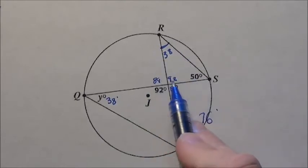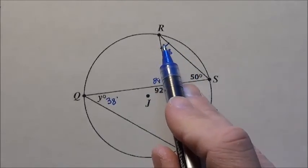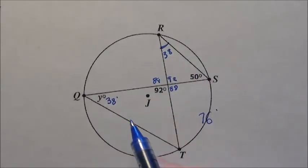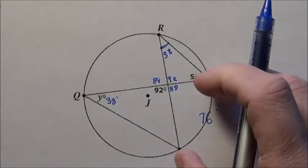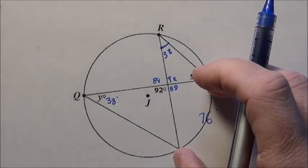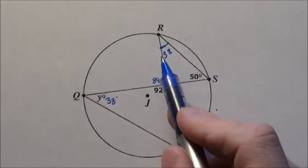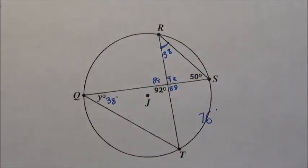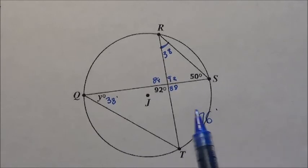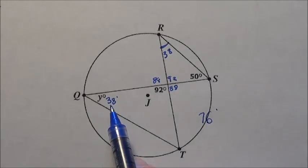But we shouldn't guess. We should simply fill in everything we know and use these inscribed angles to help us find the arc lengths. Remember, the arcs are double whatever the inscribed angles are, or the inscribed angles are half of whatever the arc is. Since that arc is 76, Y is half as much: 38 degrees.